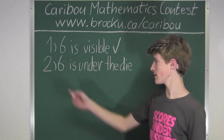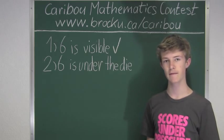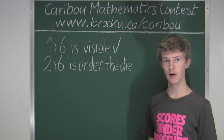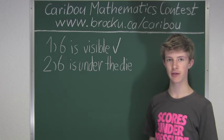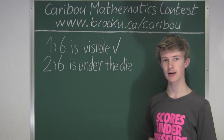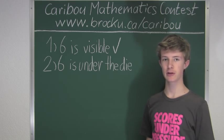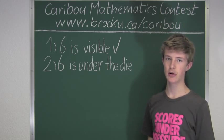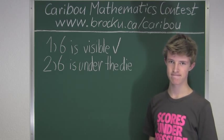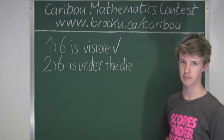Now let's look at case 2: 6 is under the die, so it is not visible. If 6 is the number under the die, we know that the numbers 2 and 3 must be visible. Since we want the product, we multiply 2 times 3, which equals 6. So, even multiplying by any other numbers, the product must still be divisible by 6, because 2 times 3 is 6. So, for case 2, the product must always be divisible by 6.